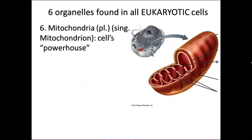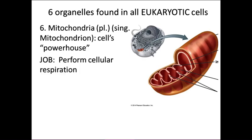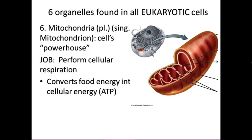The sixth organelle found in all eukaryotic cells is the mitochondria — the cell's powerhouses. Mitochondrion refers to a single one; mitochondria is the plural. We have many of these in places like our muscle cells. What they do is perform cellular respiration — a complex process we'll learn about later — that converts the food you eat into cellular energy in the form of ATP. ATP is the form of energy that cells can use to do work.